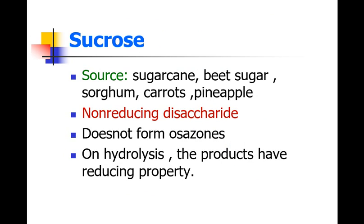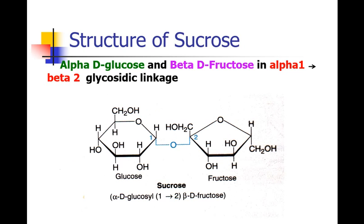Another disaccharide example is sucrose. Sucrose is a non-reducing disaccharide mainly present in sugar cane, beetroot, sorghum, carrots, and pineapple. Sucrose does not form osazones on hydrolysis, but the products of hydrolysis do have reducing properties. Sucrose on hydrolysis becomes a reducing sugar, but before hydrolysis it is a non-reducing sugar.